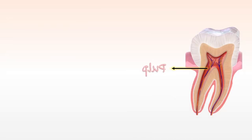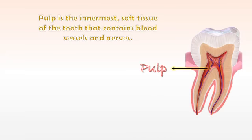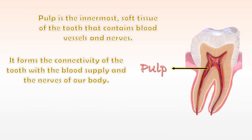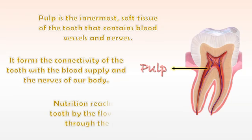Pulp is the innermost soft tissue of the tooth that contains blood vessels and nerves. It forms the connectivity of the tooth with the blood supply and the nerves of our body. Nutrition reaches our tooth by the flow of blood through the pulp.